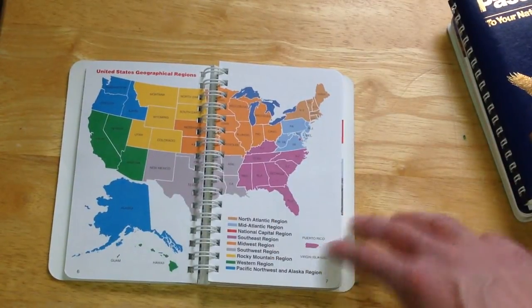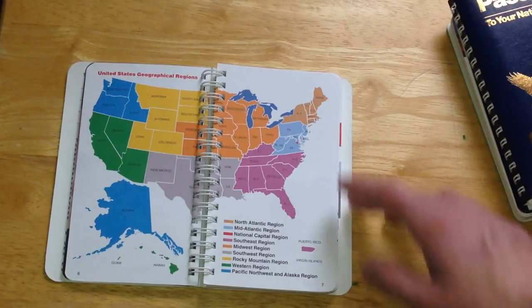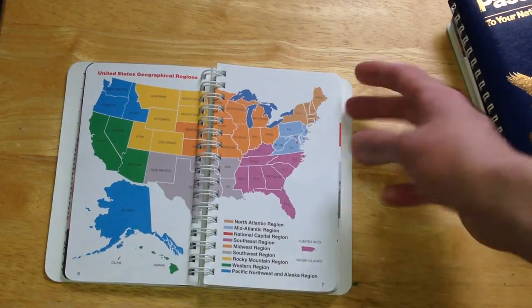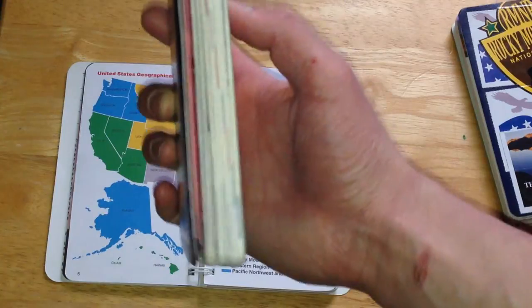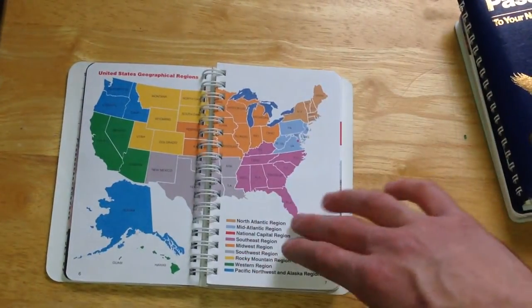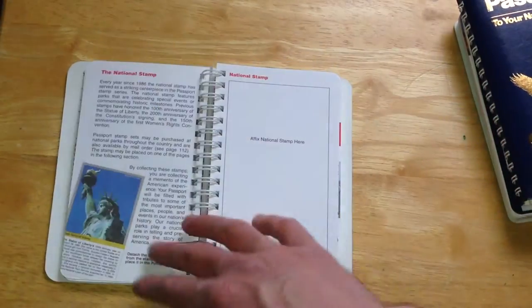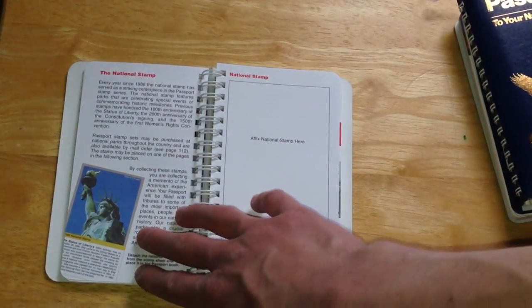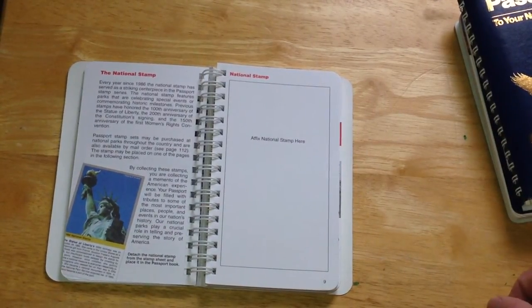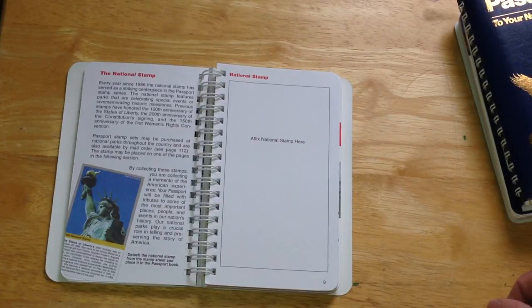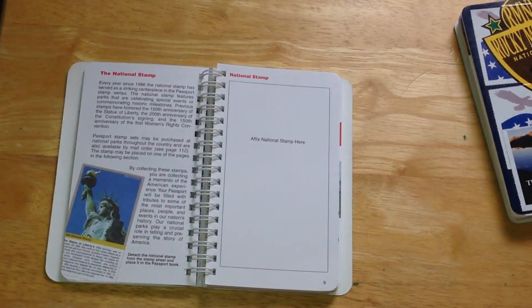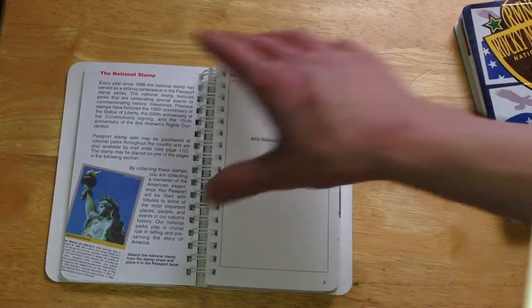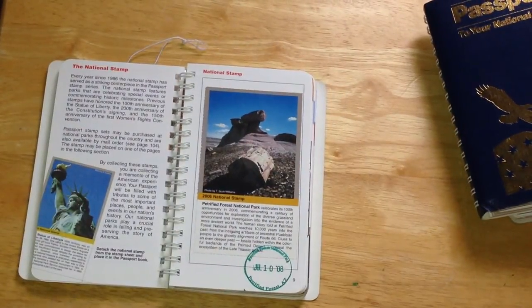They break up this passport into different regions that are all color coded. If you look down the spine, or down the open part of the book, you can see going down they're broken up into different colors by region, which is really helpful. They also have what's called the national stamp, which is just a stamp that's selected as a national stamp for the year. They make it a bigger stamp than the rest. So we'll go into the stamps now as well as the cancellations. I'll break open this other book because I actually have one I've been to.